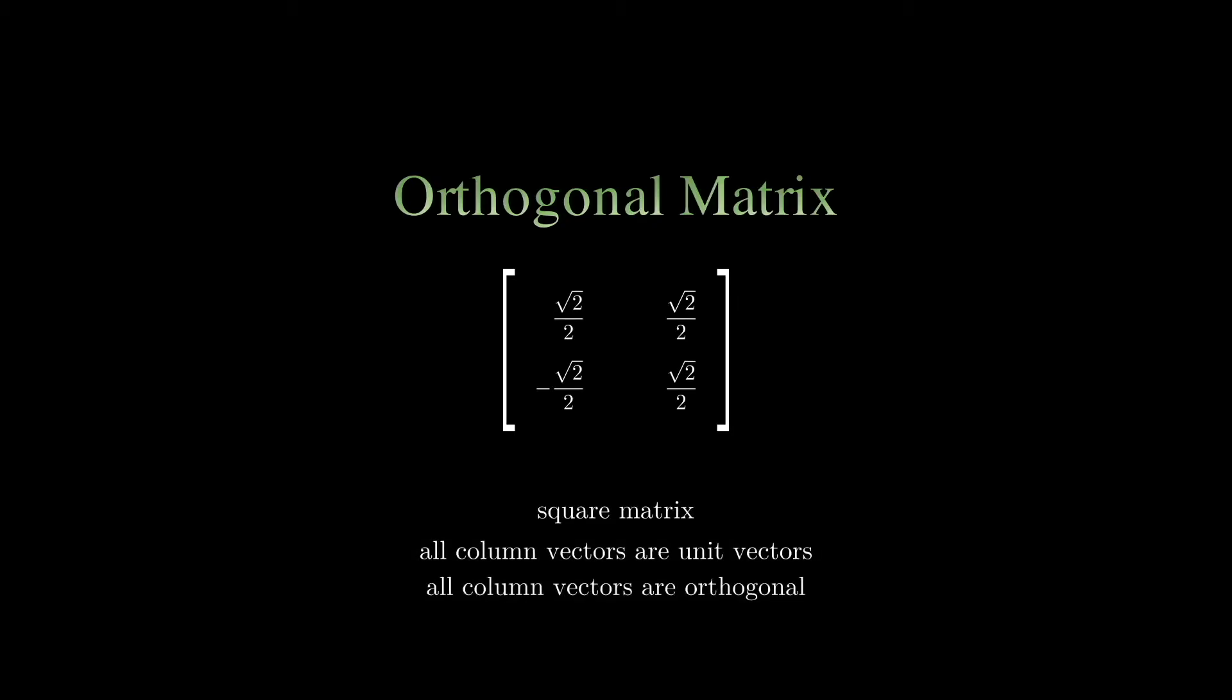Next, the orthogonal matrix. This one is very important for chapter 2 and 3. It's a square matrix. Every column vector is a unit vector, and they're all orthogonal to each other. Let's dissect the definition a little bit. So, what is a column vector?